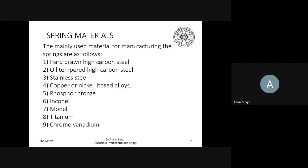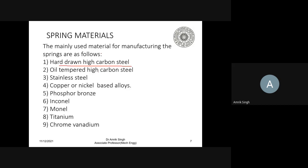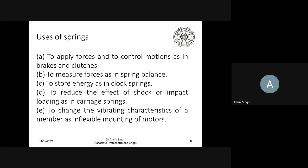Springs are made of special materials. The list includes: hard drawn high carbon steel, oil tempered high carbon steel, stainless steel, copper and nickel-based alloys, phosphor bronze, Inconel, Monel, titanium, and chrome vanadium. These are the materials used for the manufacturing of springs.